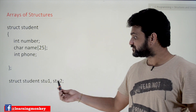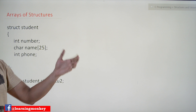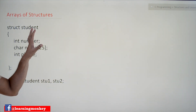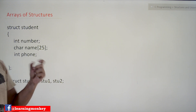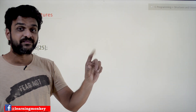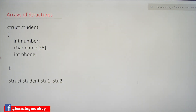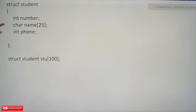To store details of a hundred students we would need variables s1, s2, s3 ... all the way up to s100 — a hundred variables of data type 'student'. In order to avoid that, this can be done by declaring only one variable which is an array.